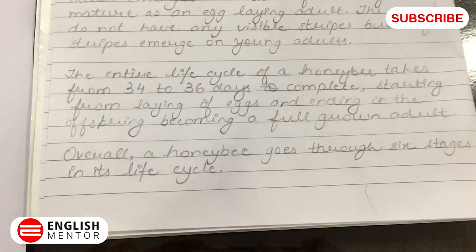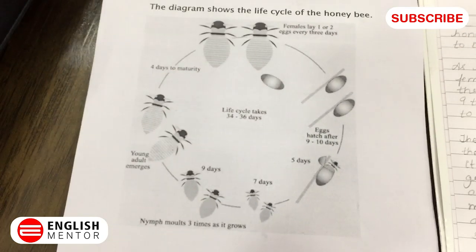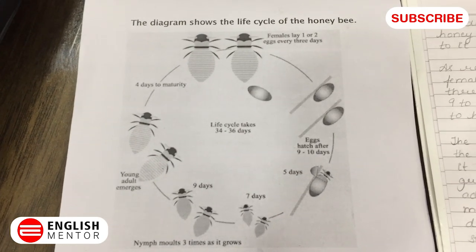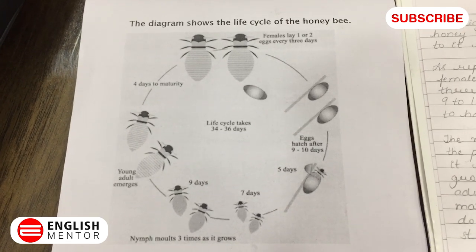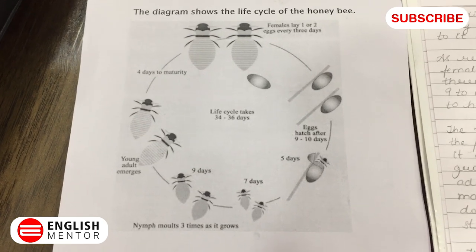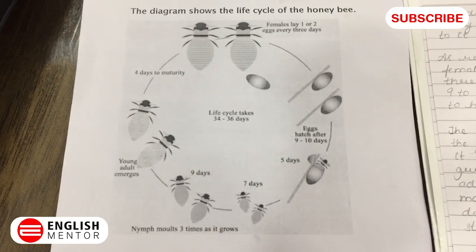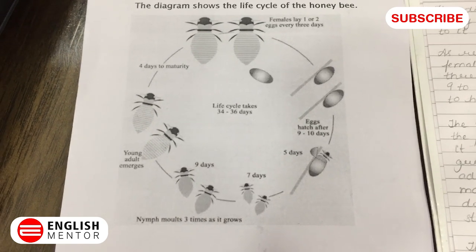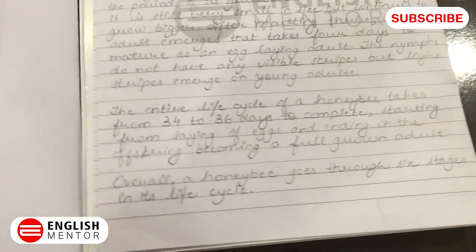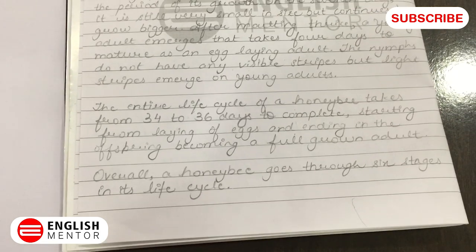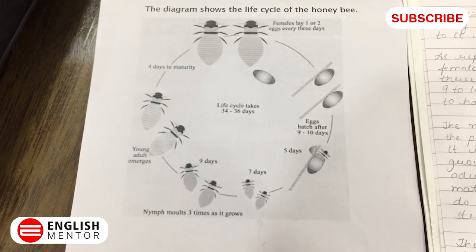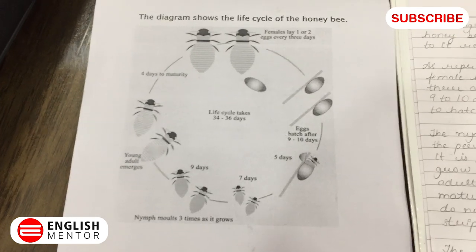Overall, a honeybee goes through six stages in its life cycle. The overall paragraph consists of any eye-catching feature or notable representation that you may see in the diagram, and it can be written at the end of the task or after the introduction. So we have written: overall, a honeybee goes through six stages, as represented in the diagram, in its life cycle.